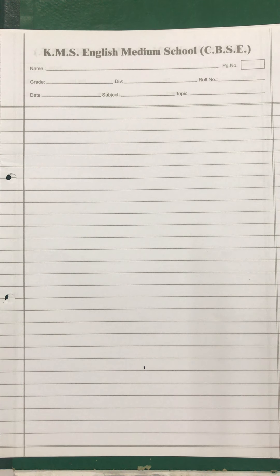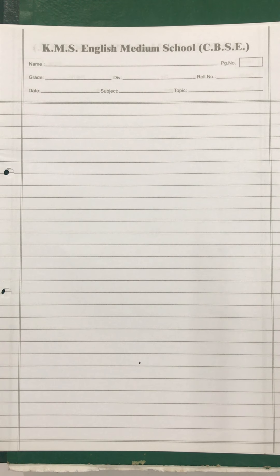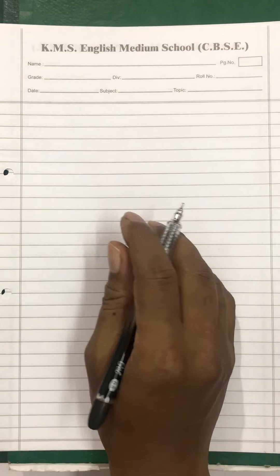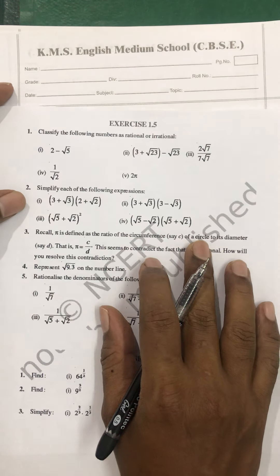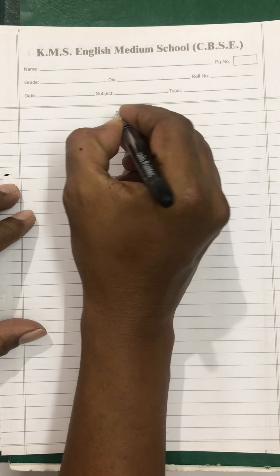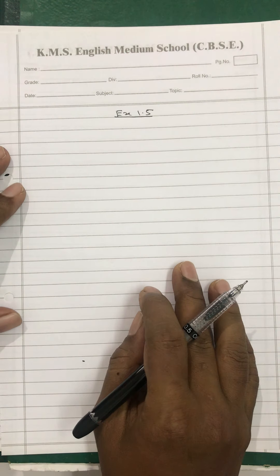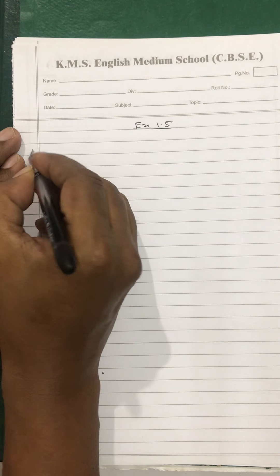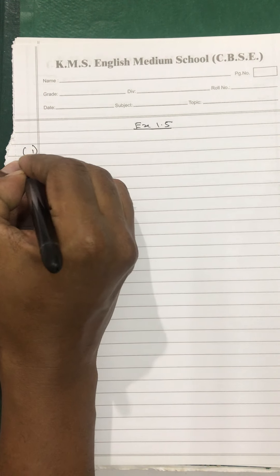Hello my dear students. Now after completing all the required basics of exercise 1.1, I think we are ready to solve exercise 1.5. Let's start with this exercise 1.5, which I think most of you must have already done, but in case there is any doubt, it can be removed. The first question asks us to classify the following numbers as rational or irrational.